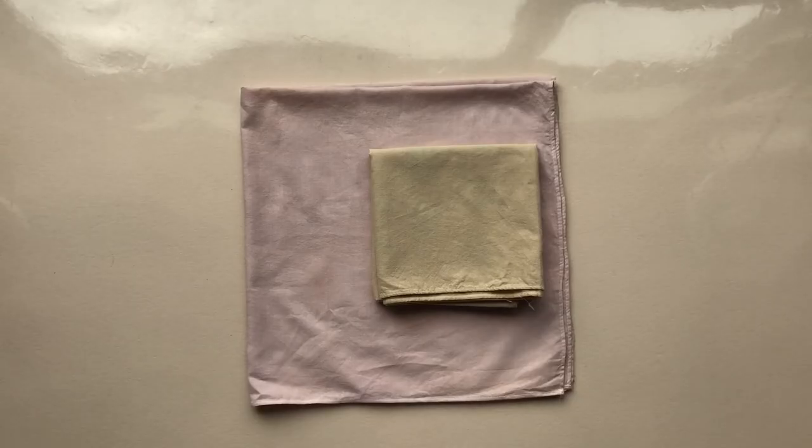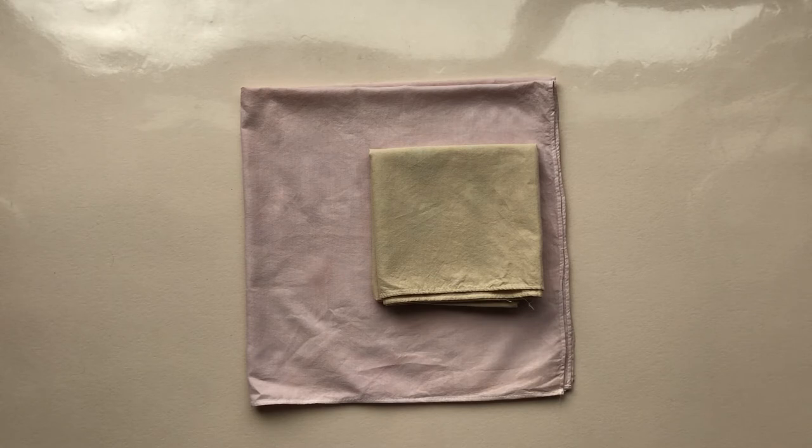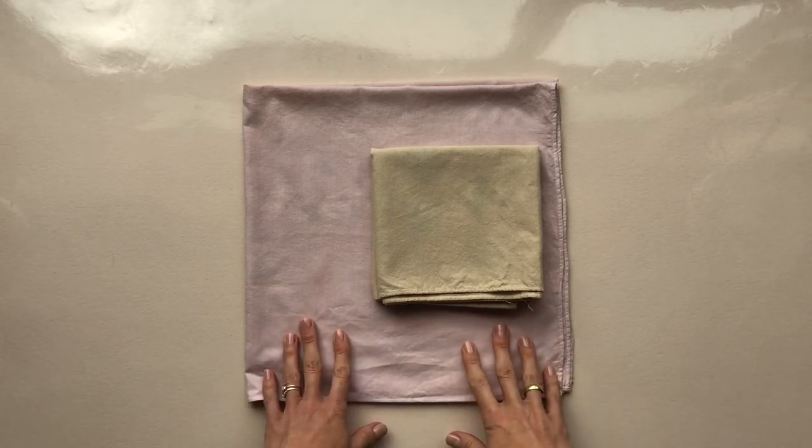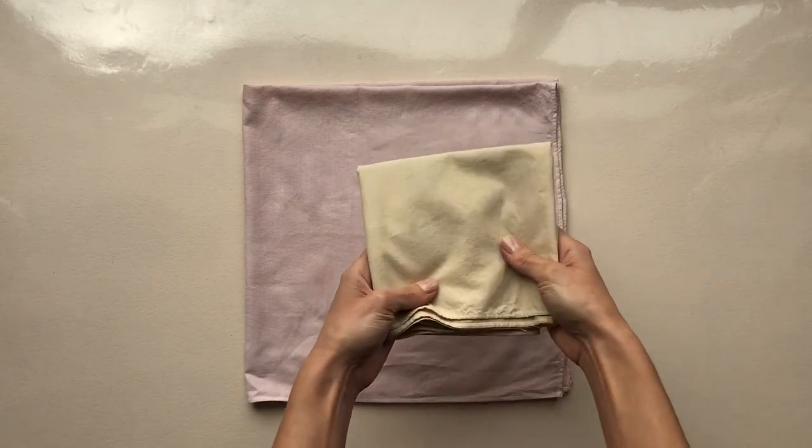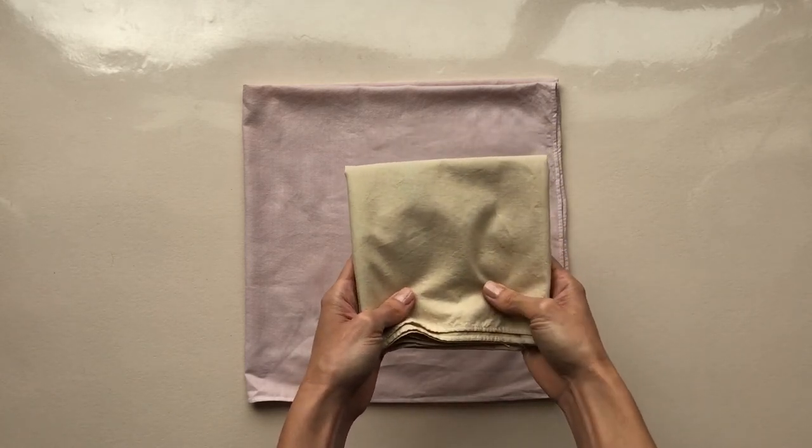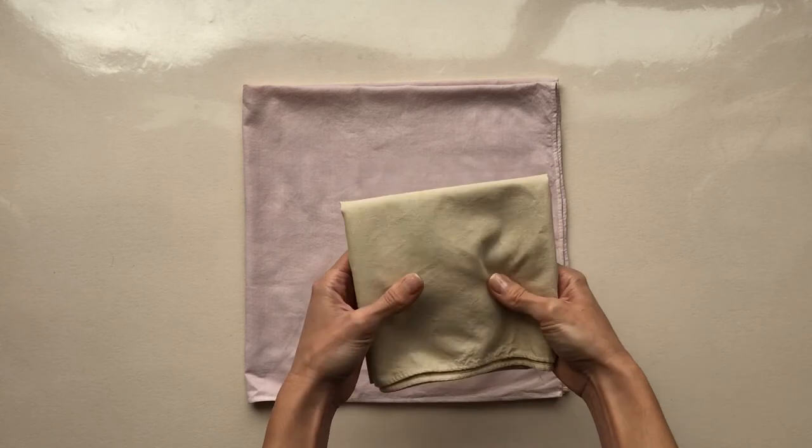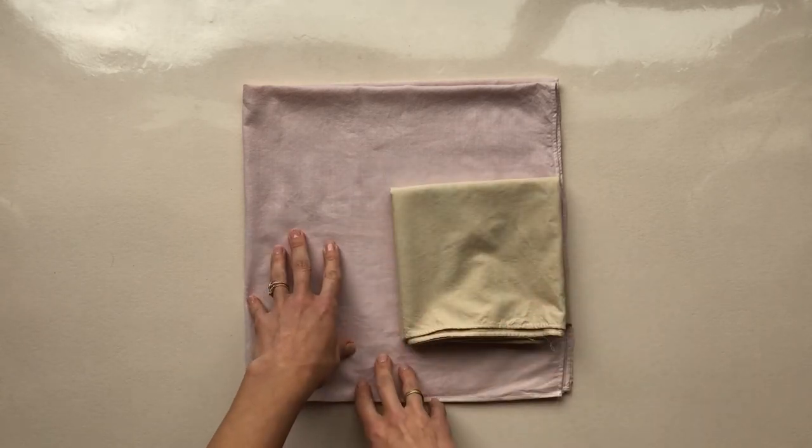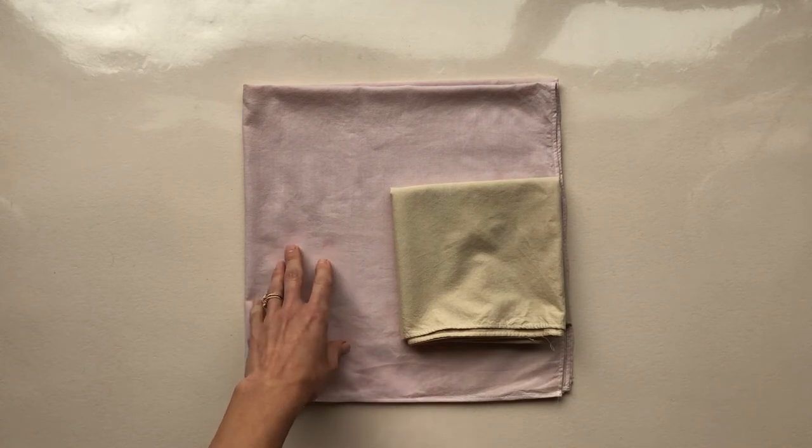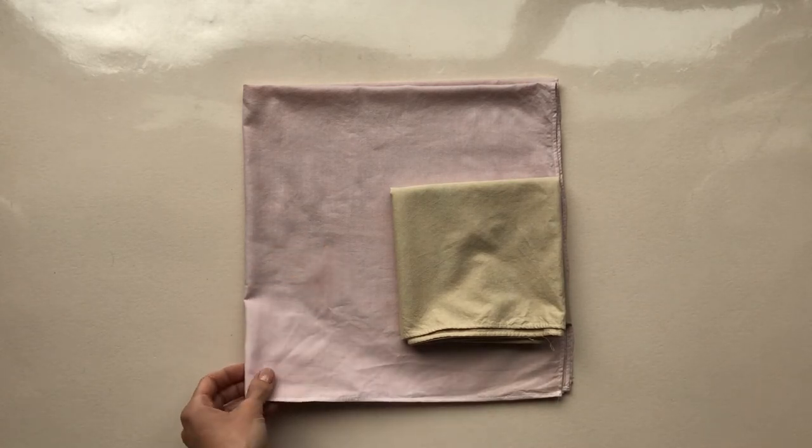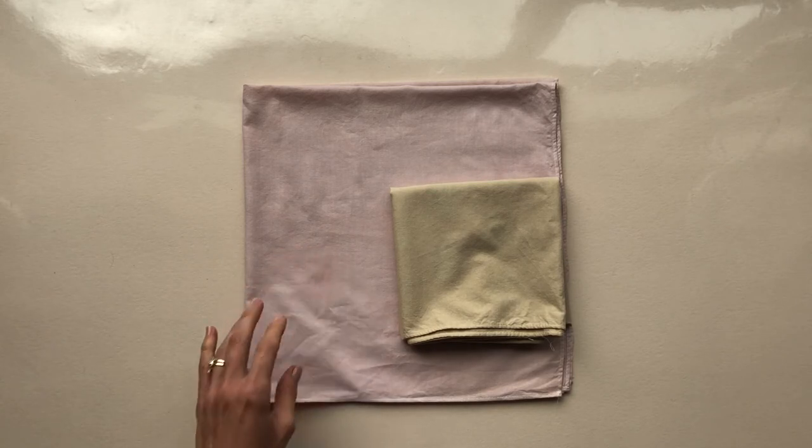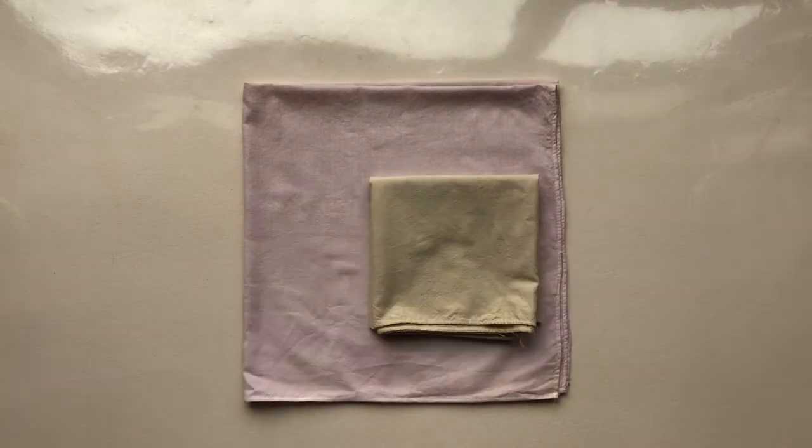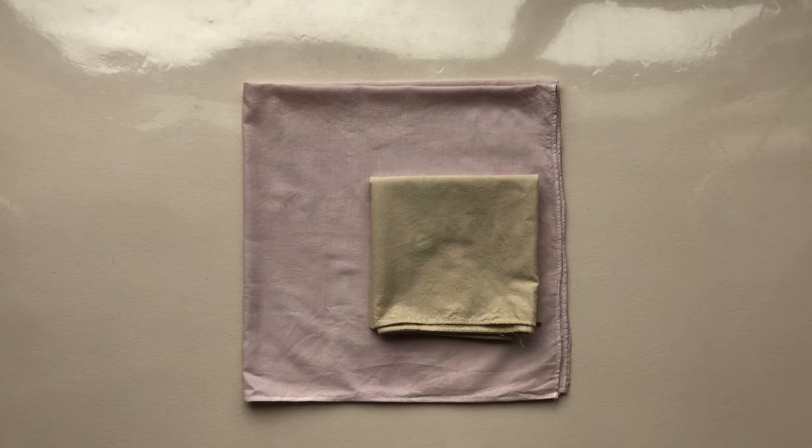It's actually really easy to dye the fabric with things you might have in your kitchen. I have two examples here. This one was dyed with tea. I used about 12 to 14 tea bags to get this kind of tan color. And then this one was dyed with avocado pits. So I used about seven avocado pits to get this kind of blushy color. There are a lot of different ways that you can dye fabric from things in your kitchen. And if you look online, you'll find all sorts of recipes.